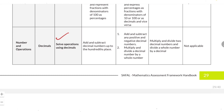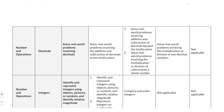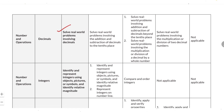For operations with decimals, you should know addition and subtraction up to the hundredths place, addition and subtraction of any positive and negative decimal numbers, multiplication and division of decimal numbers by whole numbers, multiplication and division of two decimal numbers, and dividing whole numbers by decimal numbers. Real-world problems include addition and subtraction of decimals to the tenths place, beyond the tenths place, and multiplication and division of decimal numbers by whole numbers and by other decimals.